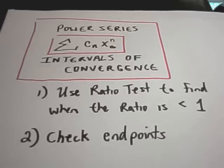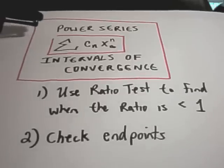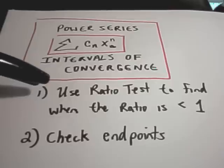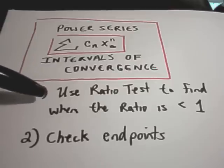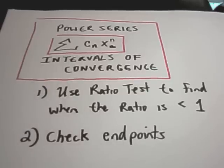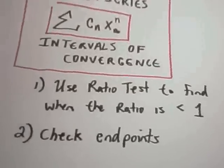In this video I'm going to talk about finding the intervals of convergence for a power series. The basic idea is to use the ratio test to figure out where the ratio is smaller than one, and then you have to check your endpoints separately. If you're not sure about the ratio test, I have other videos on YouTube that cover it. Let's do a problem.